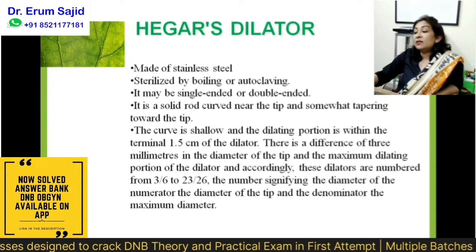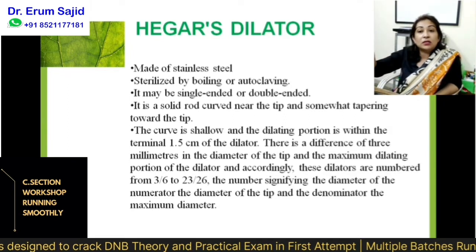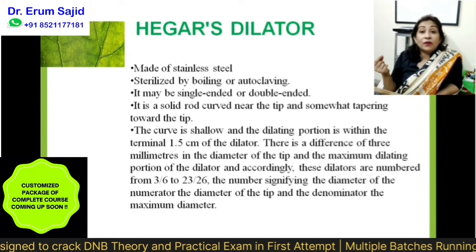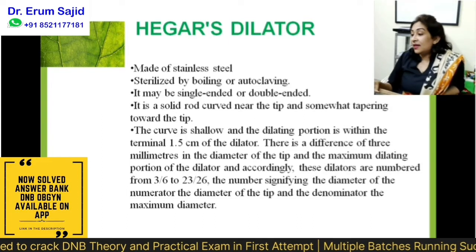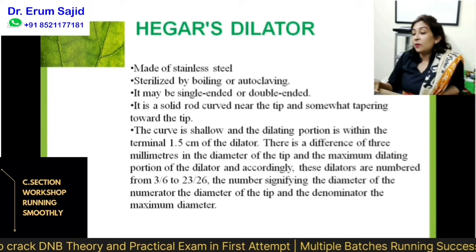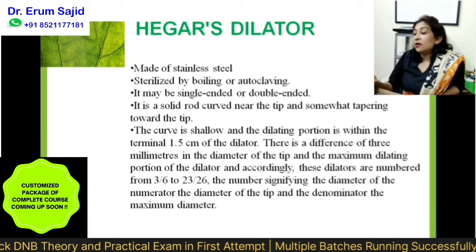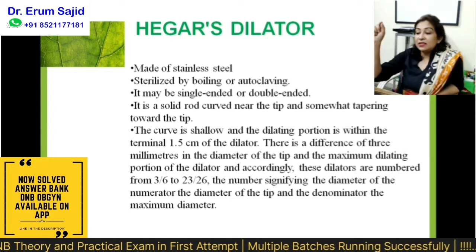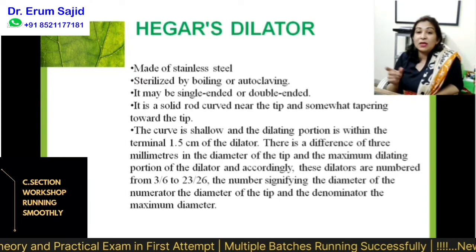There is a difference of 3 mm between the diameter of the tip and the maximum dilating portion, and it changes gradually. The maximum dilating portion of the dilator is numbered from 3/6 to 23/26 — the numerator signifying the diameter of the tip and the denominator the maximum diameter. So the tip might be 23 and the maximum goes to 26 — that is the meaning of numerator and denominator.